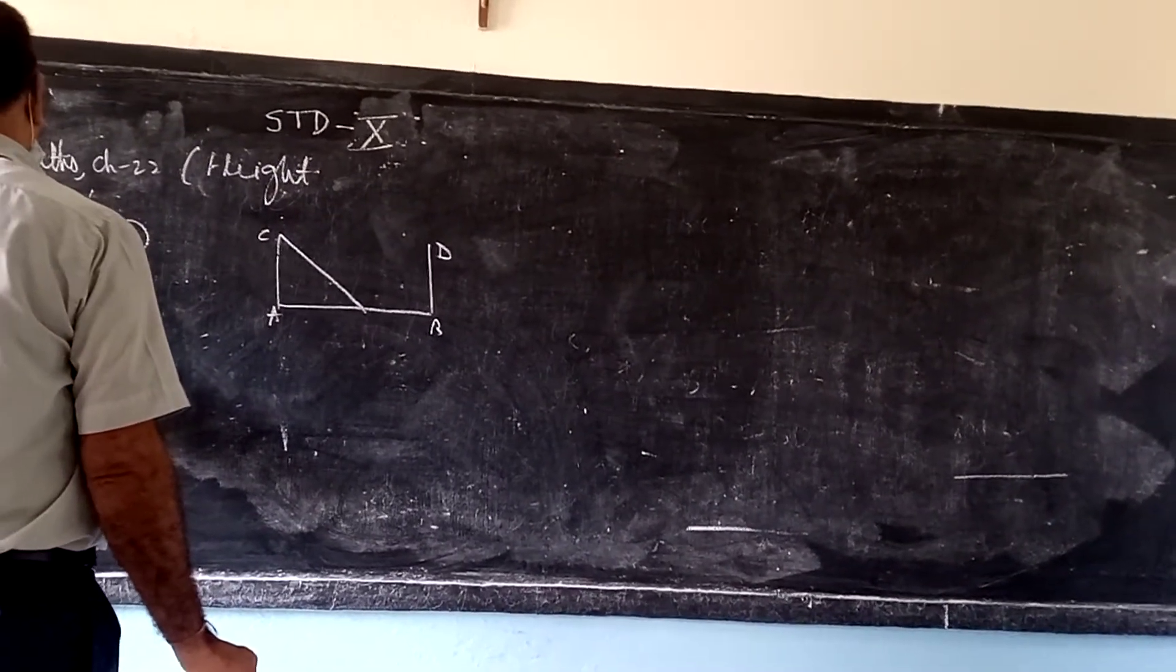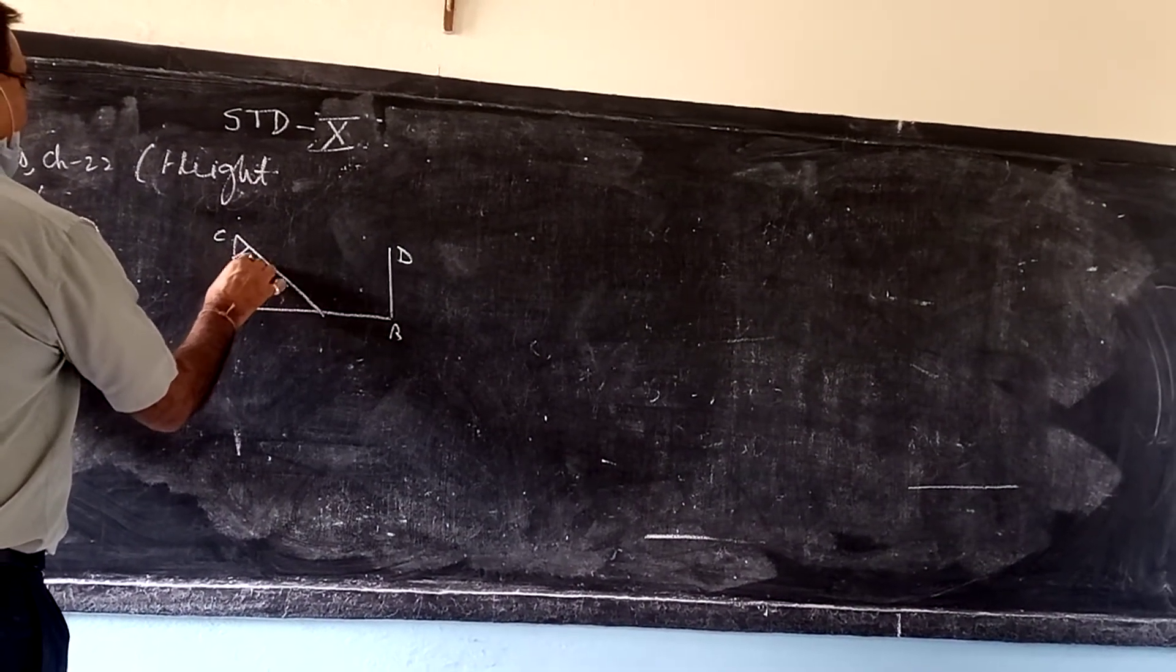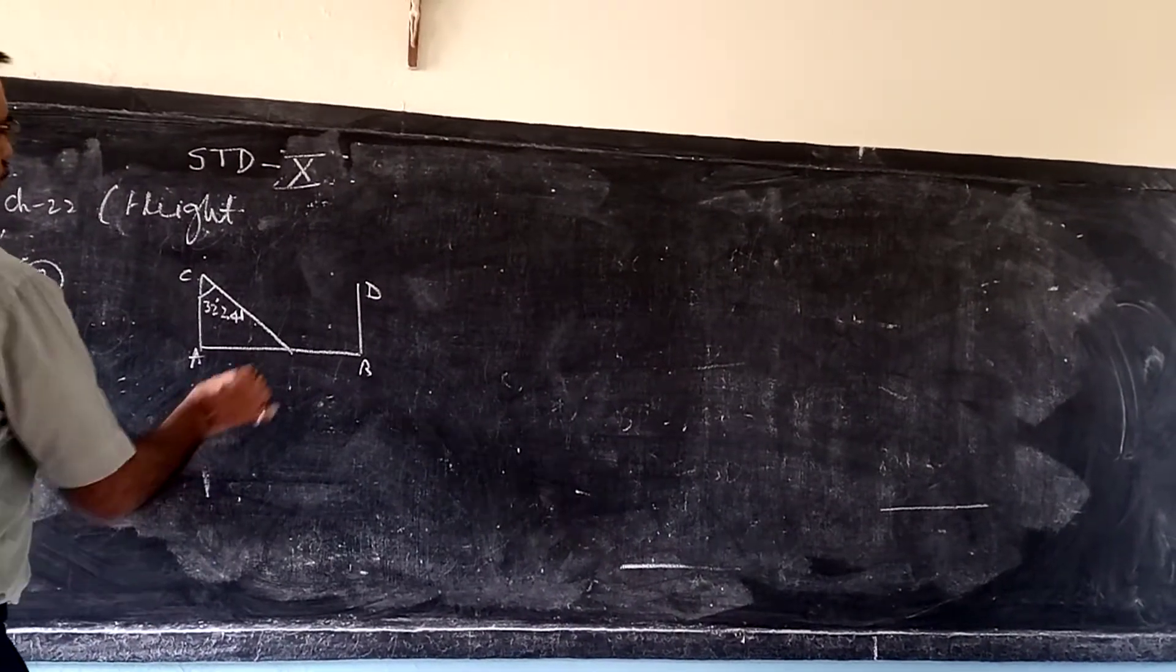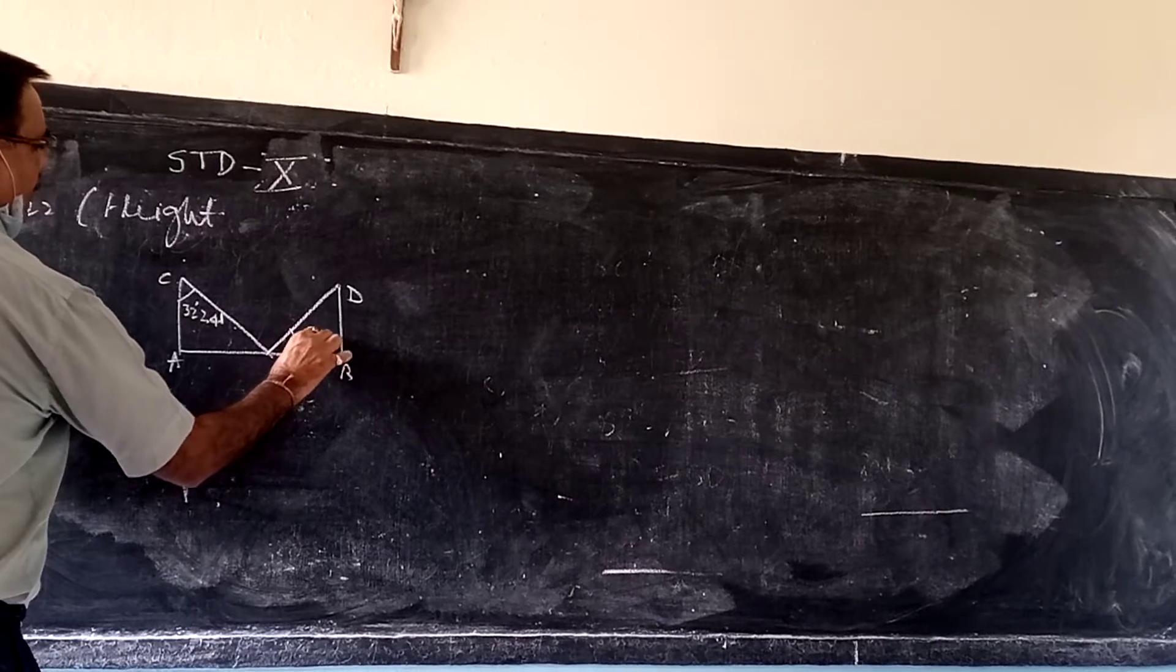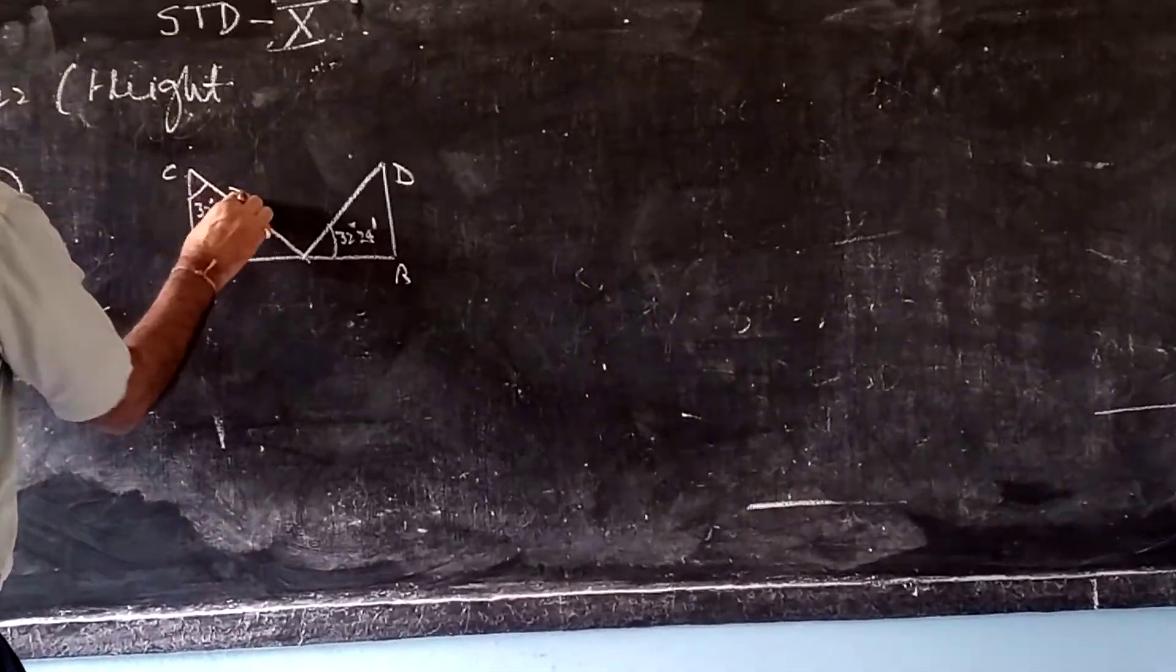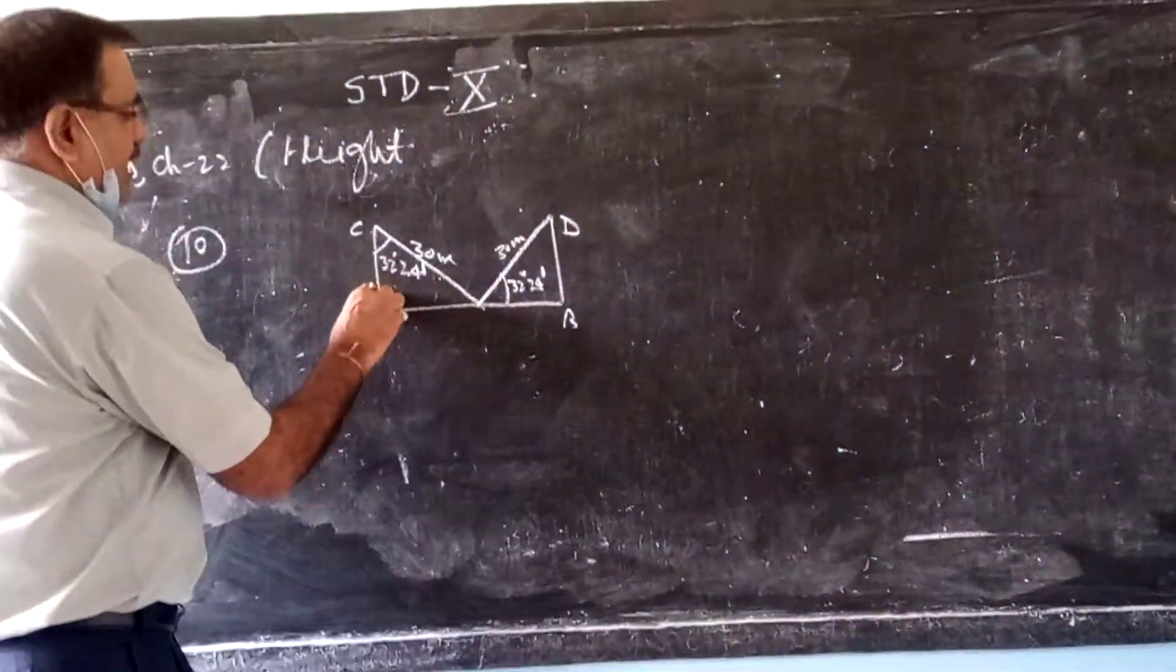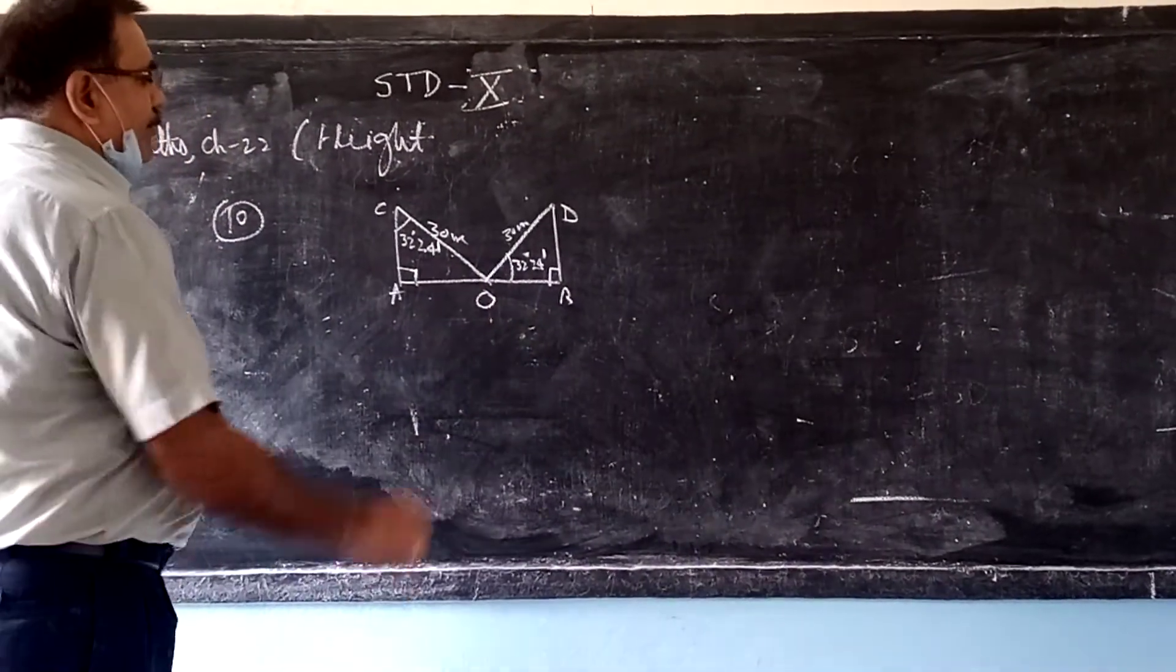It makes 32 degrees 24 minutes with the pole. And when it leans against the other pole, it makes 32 degrees 24 minutes with the road. This is 90 degrees, this is 90 degrees. This is the angle.